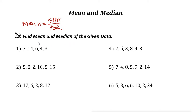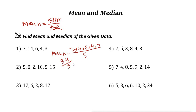To find the mean or average, we just need to add all the values: 7 plus 14 plus 6 plus 4 plus 3. We have 5 numbers, so we divide by 5. That gives us 7 plus 14 is 21, plus 6 is 27, plus 4 is 31, plus 3 is 34. So it is 34 over 5, which equals 6.8. First add them up, then divide by the number of numbers.